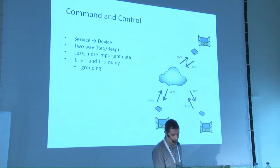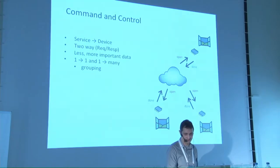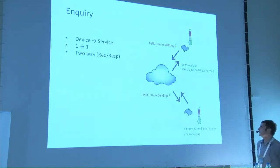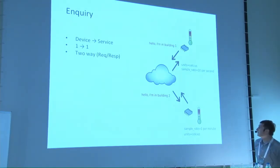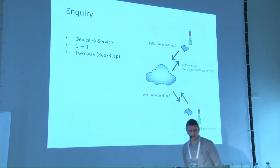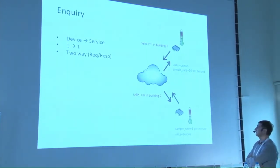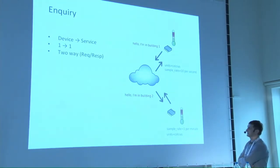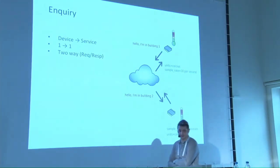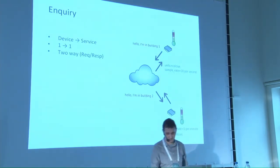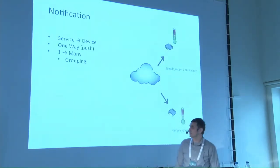One more important thing in command and control is that you can have one-to-one communication, sending messages addressed to a single device, or you may want to address many devices in the same group — for example, turning the AC on for a whole floor. We need to support both one-to-one and one-to-many communication. Inquiry is similar but in the other direction — request-response two-way communication from the device to the service, useful for onboarding when a new device asks for basic configuration parameters like sampling rates and units.